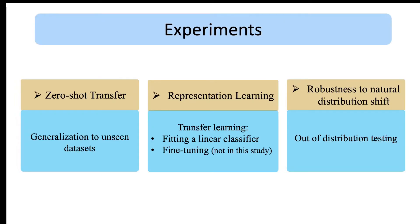Now moving to the experiments to showcase some of the capabilities of CLIP, there are three sets of experiments conducted by the authors: zero-shot transfer, where they investigated the capability of CLIP for classification on completely unseen datasets; representation learning with transfer learning; and finally, evaluating the robustness of CLIP to natural distribution shift.